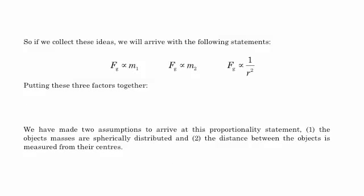If we collect these ideas, we arrive at the following statements. The force of gravity is proportional to one of the masses of the two objects, and it's proportional to the other mass of the two objects. So the two objects that are interacting affect the force of gravity. And for argument's sake, those masses could be the mass of me and the mass of the Earth. And those two things affect the force of gravity.